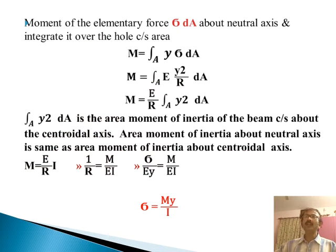The moment of the elementary force sigma dA about the neutral axis, integrated over the whole cross section area, is force times distance integrated over the entire area. Finally, we get moment equals E by R integration y squared dA. This y squared dA is the area moment of inertia of the beam cross section about the centroidal axis. This is the second moment of area or moment of inertia, denoted by symbol I. M equals E by R into I. One by R equals M by EI. Finally, sigma equals M y by I.